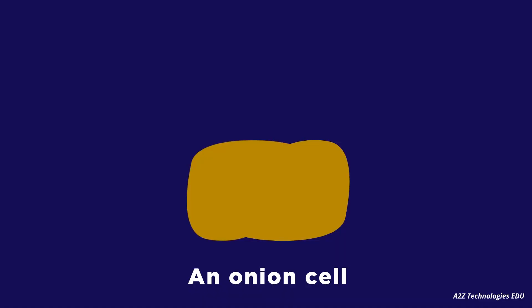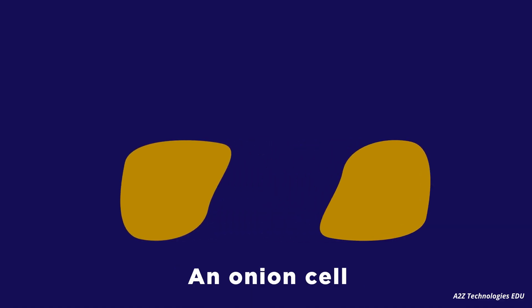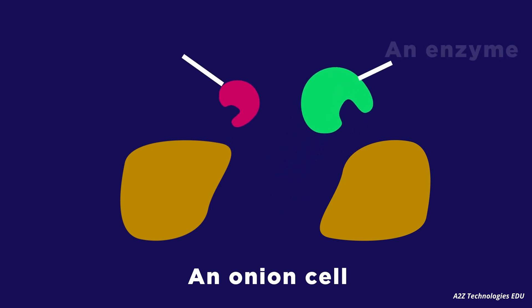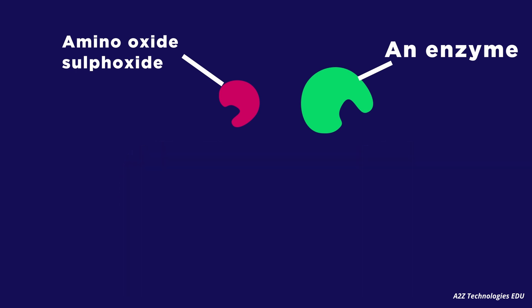For this onion, we will cut the onion cells. These are the onion cells. Now, if we cut the onion, the onion cells will burst. After that, the amino acid sulfoxide reacts with a special enzyme.